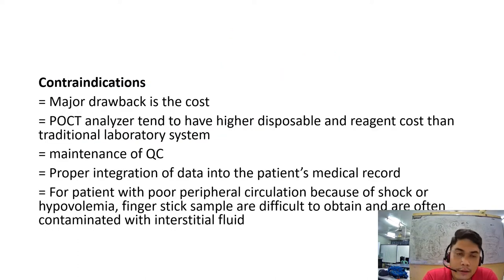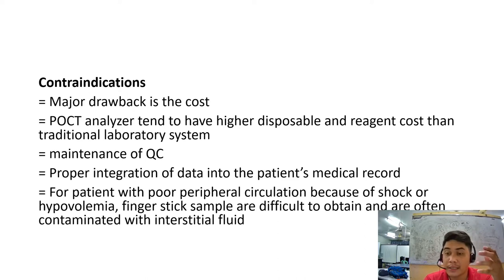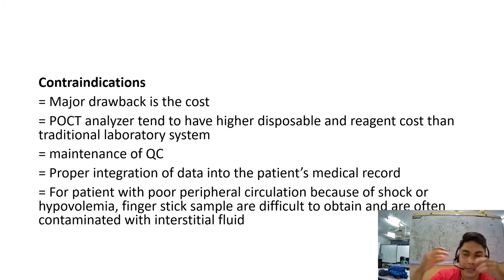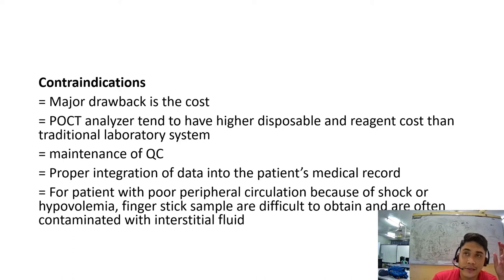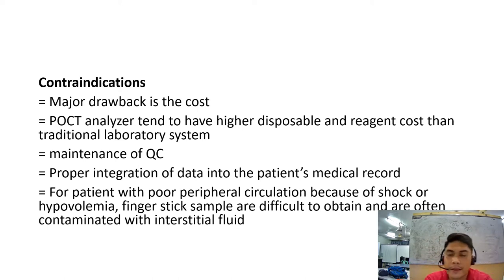What are the disadvantages of POCT? The major drawback is the cost per test. It's not cheap because each test kit is separate. In traditional testing, if you buy reagent for glucose, a container is good for 100 to 500 tests — buying in bulk brings the cost per test down. POCT analyzers tend to have higher disposable and reagent costs than traditional laboratory systems.